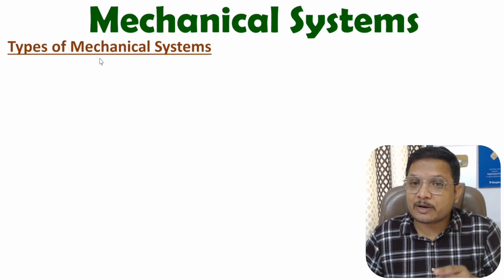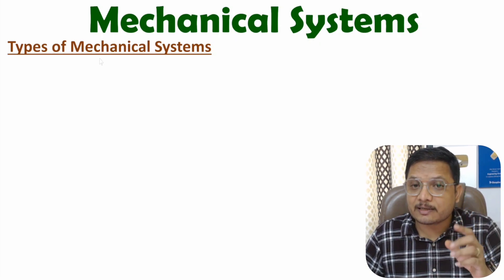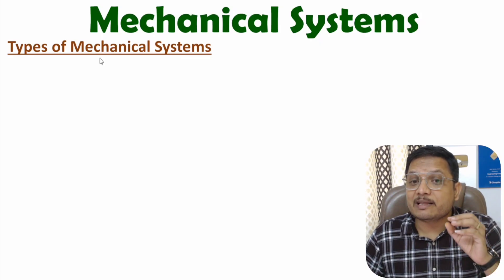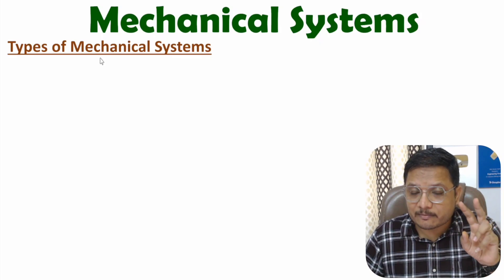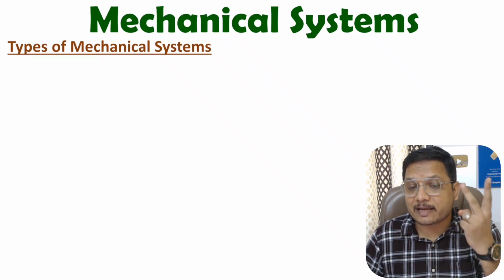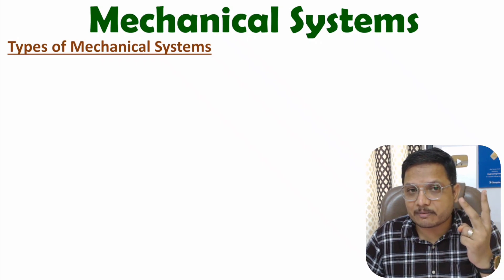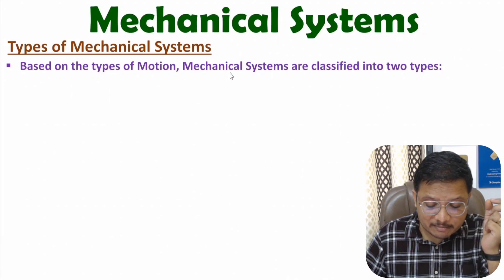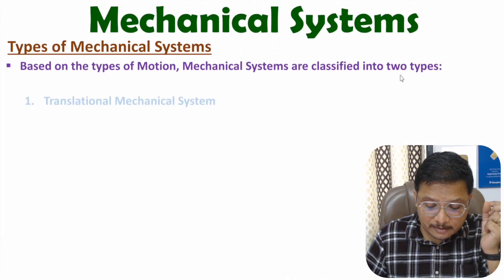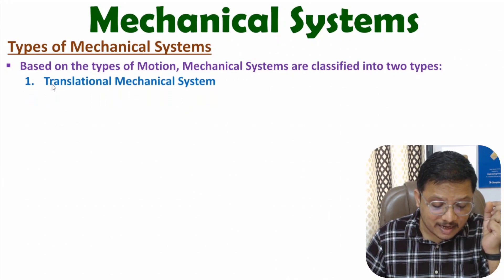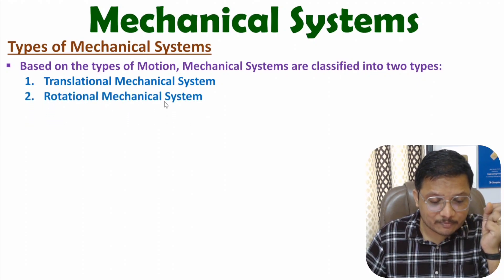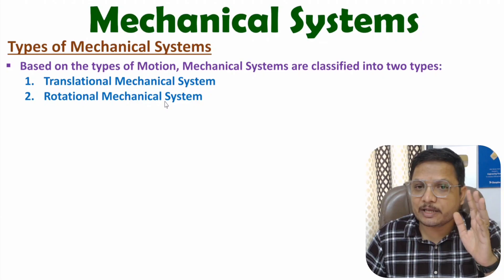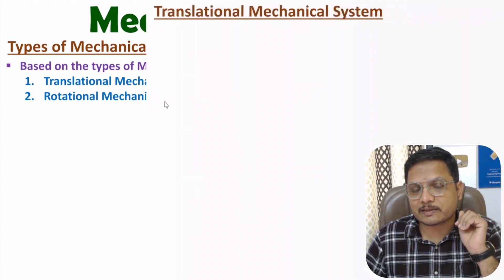Based on motion of object, mechanical systems can be classified into two types. The first one is translational mechanical system and the second one is rotational mechanical system.